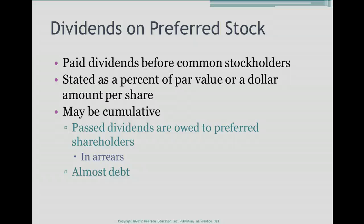This section deals with dividends on preferred stock. Dividends on preferred stock are paid before dividends for common stockholders. Dividends are typically stated as a percentage of par value or a dollar amount per share.